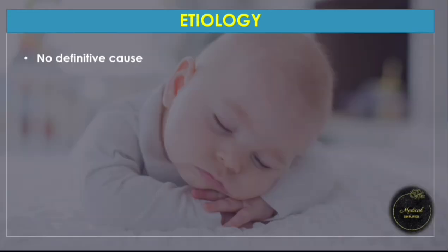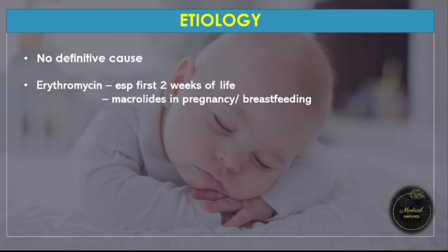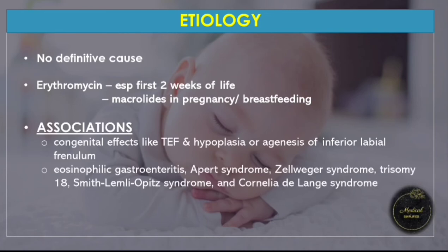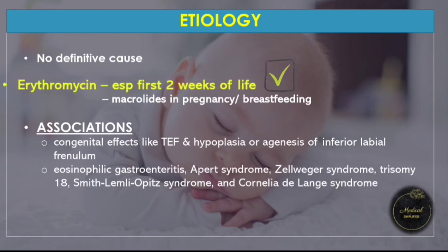The exact cause is not known. Use of erythromycin in the first two weeks of life has been suggested as a risk factor, and therefore erythromycin is avoided in newborns. Use of macrolide antibiotics in the mother during pregnancy or breastfeeding has also been suggested. It may be associated with other congenital anomalies like tracheoesophageal fistula and a few other syndromes. Not using erythromycin in the first two weeks is a high-yield exam question.